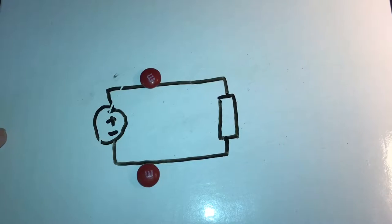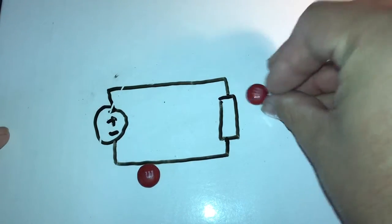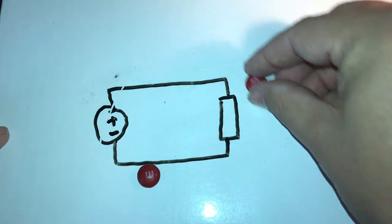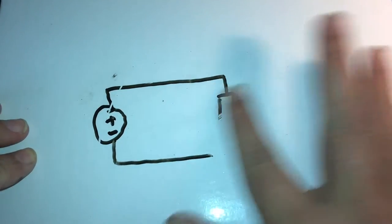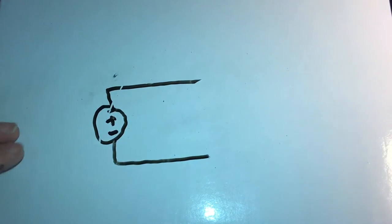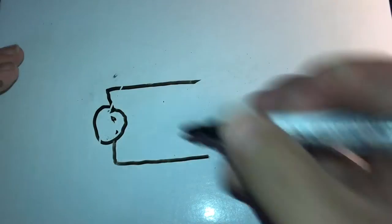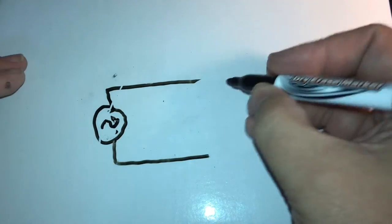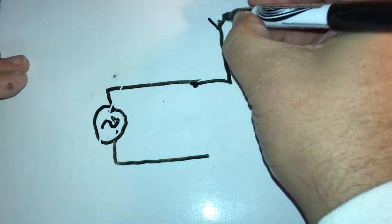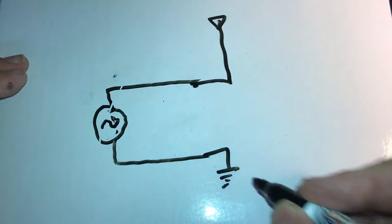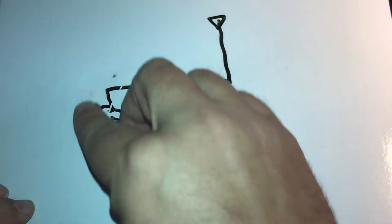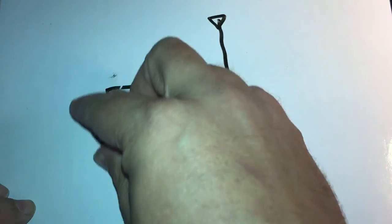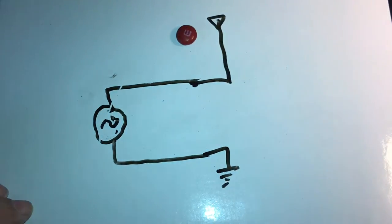We got a little more advanced when we started talking about AC — alternating current — which means the electrons move through the resistor this way and back that way. Now we have an AC voltage source, a wire that sticks out here, and we ground this side. The voltage source pushes your electrons up to the antenna and back, up and back.